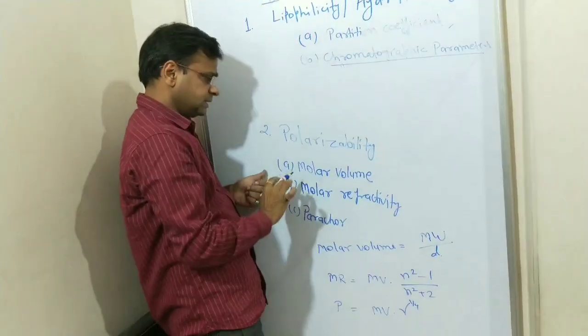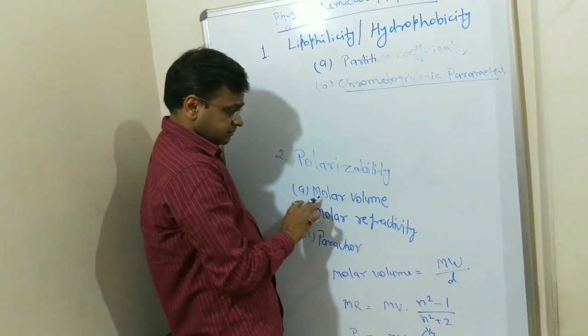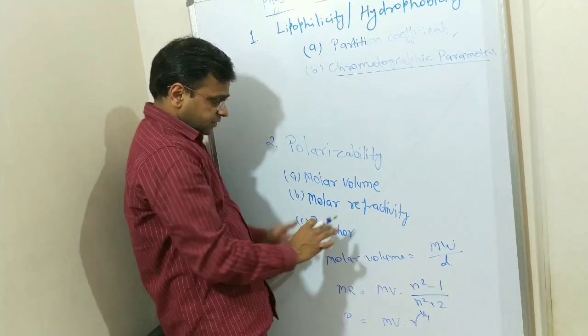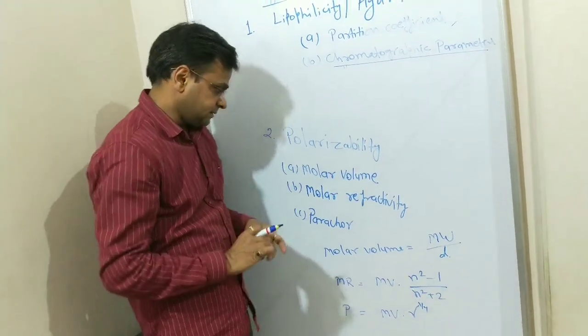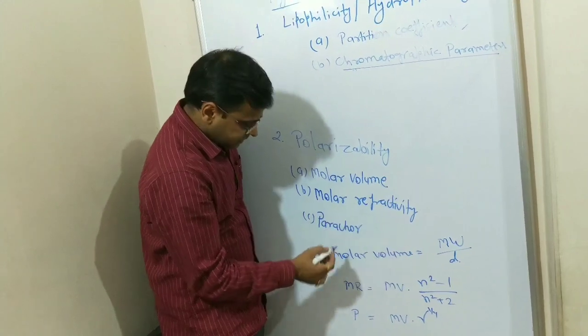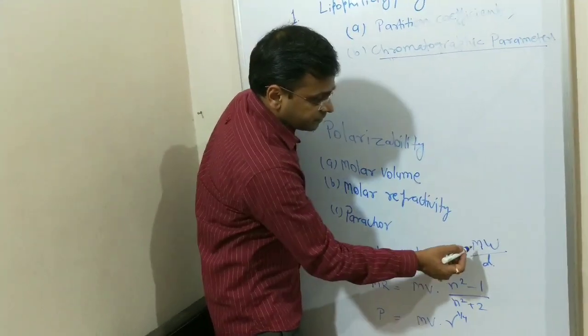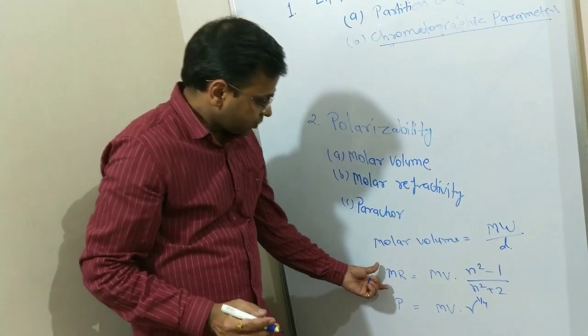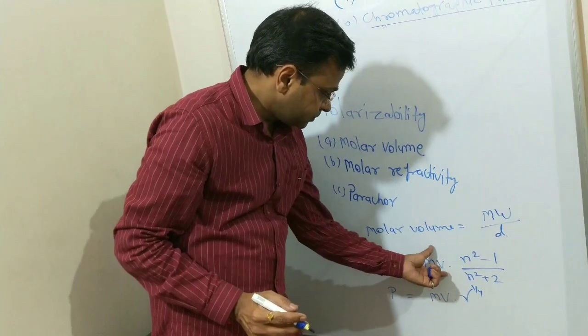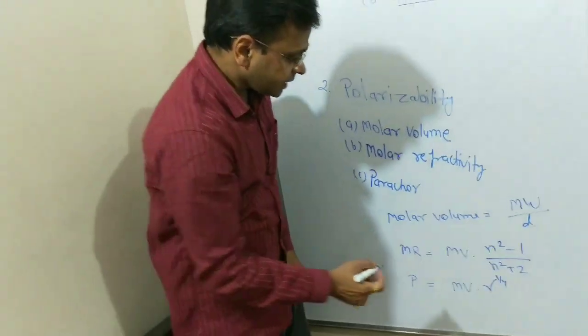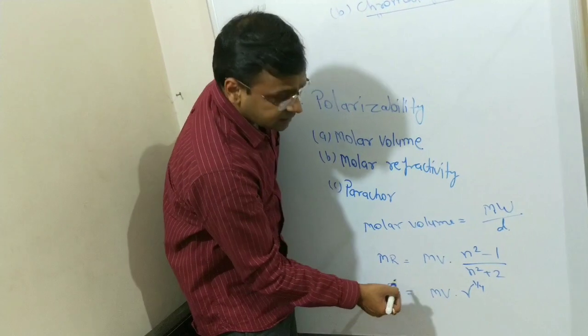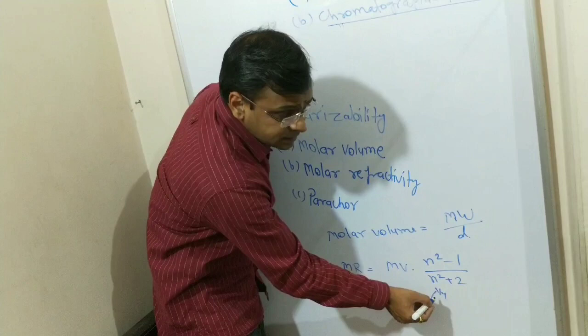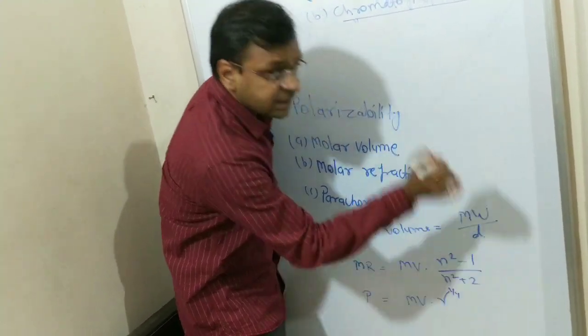Calculability depends upon three parameters. First is molar volume, second is molar refractivity, and third is parachor. All these are interrelated. They have deep relation. Suppose we take the formula of molar volume as molecular weight upon density. So molar refractivity is molar volume into refractive index. And parachor value, as we know, is molar volume into gamma, that is surface tension, raised to power 1 by 4.